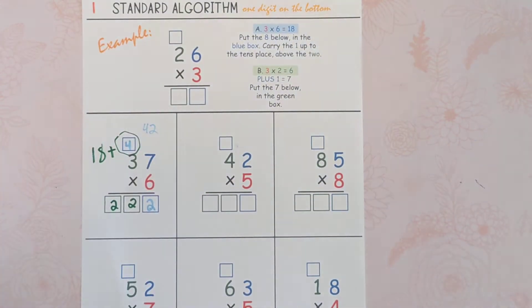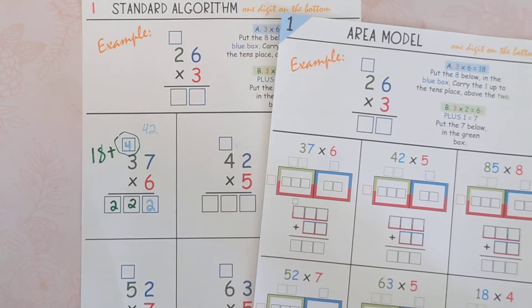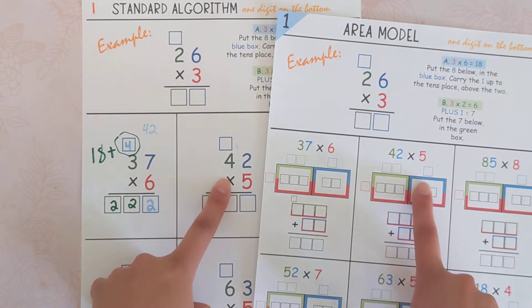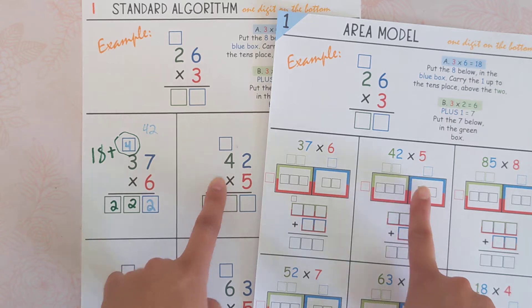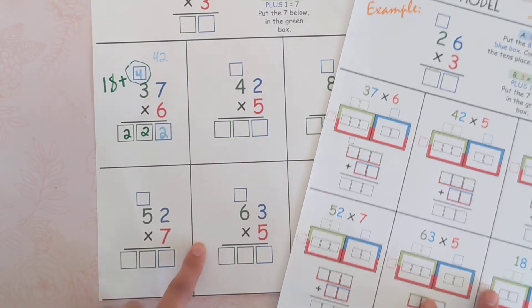And again, every single question will have a video. You can also find the area model and partial products for these that have the same numbers so that students can work on the same questions, but do it with the algorithm that works for them.